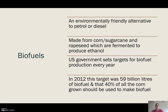The US government puts targets in place every single year for how much biofuel they want to see produced. In 2012, the target was 59 billion litres, and there is a stipulation that 40% of all the corn grown in the US should be used to make biofuel.